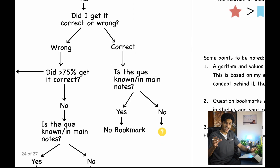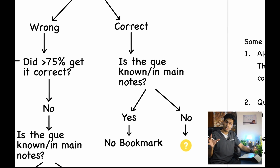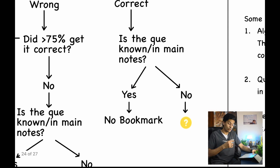If you got the question correct, ask the same question: is it known or in your main notes? If it is known and you got it correct, you generally don't need to bookmark it. But if it's missing from your notes, it's possible you got it correct by guesswork, so mark it with the question mark. The basic point of the flowchart is to prioritize PYQs first. The rest of the flowchart deals with how to bookmark non-PYQ questions. The 75% value is not concrete — personalize it based on your own experience.